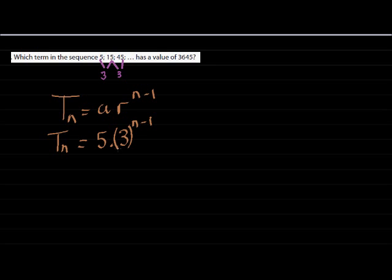They are asking which term in the sequence will have the value 3645. They're asking for the term's position - which number term will it be? This means 3645 is the value that some position x has. Let's let the term position be x.